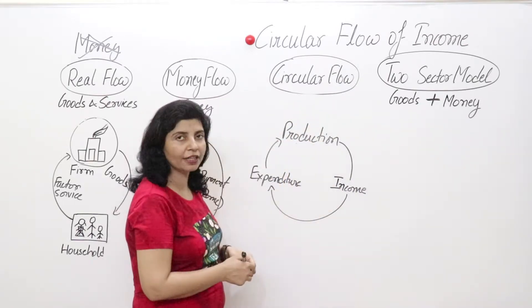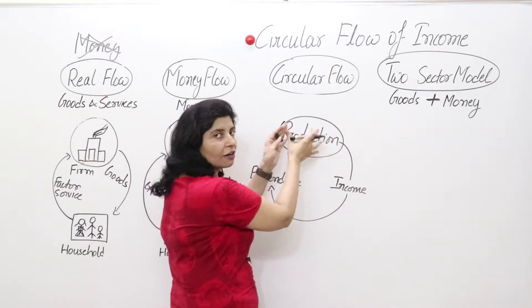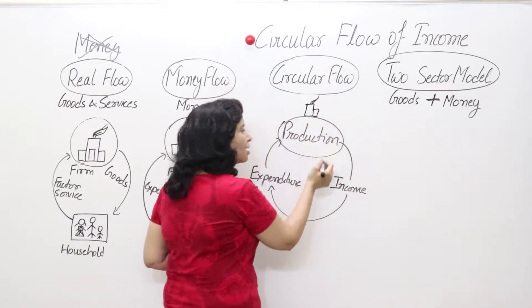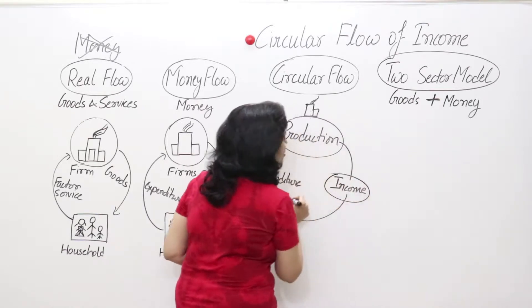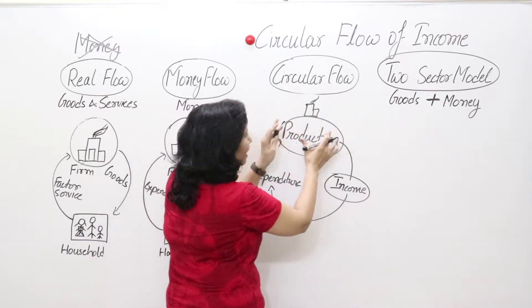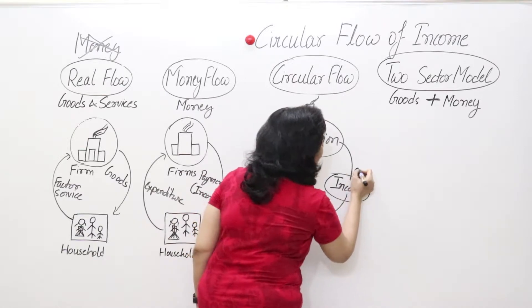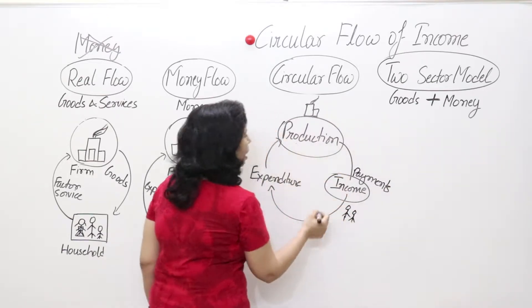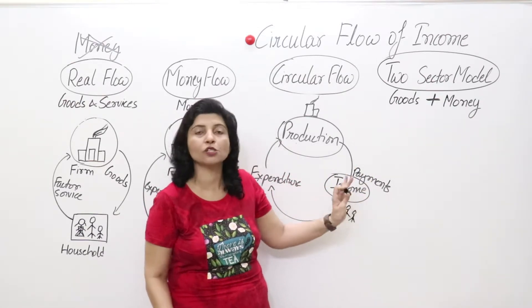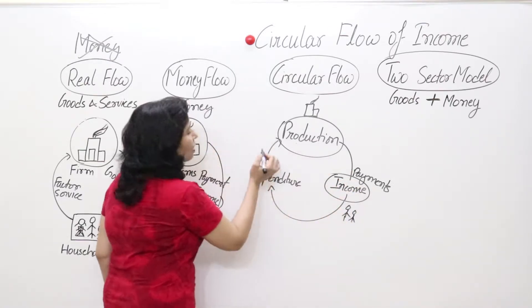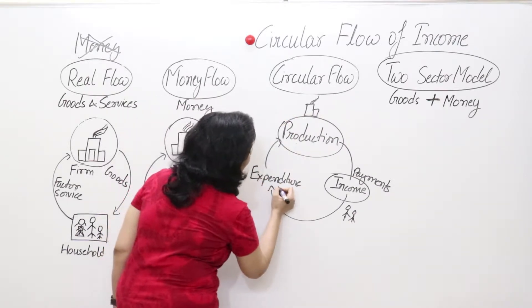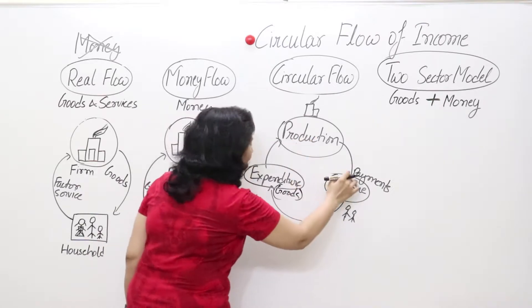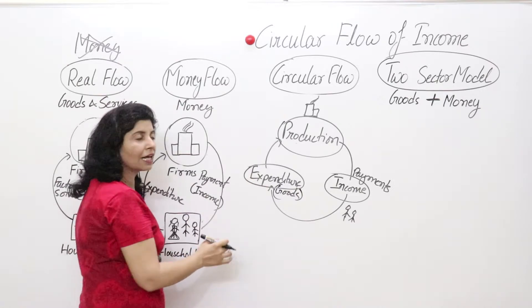When factors of production produce commodities — when households work in firms — they produce goods and get payment. That is the income phase: income is generated and distributed. The whole money generated from producing goods is distributed as income to households. Since households cannot eat their salary, they spend that money on goods and services produced by firms. That is the expenditure phase. So whatever money people earn from working, they spend — this is the circular flow of money.